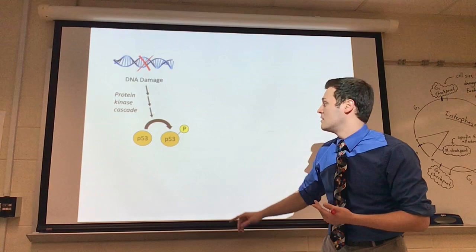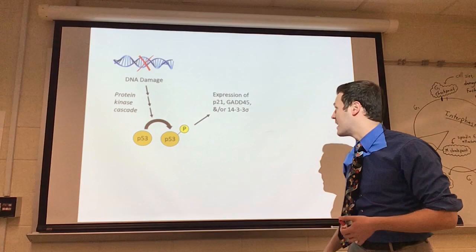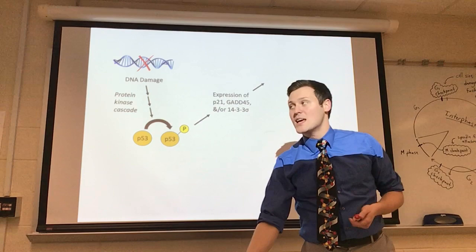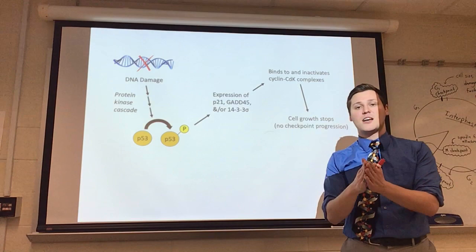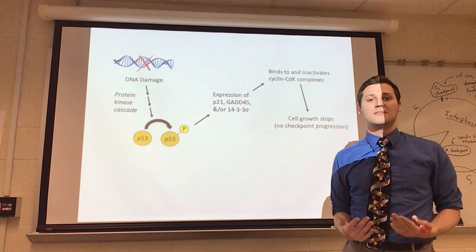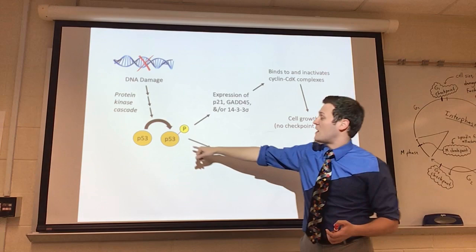we ultimately have P53 phosphorylated, and once it's phosphorylated, it can go on to do things like express these proteins that you don't need to know. These proteins will inhibit the cyclin, cyclin-dependent kinase complexes, or cyclin CDK complexes, and those complexes will prevent the cell from moving past its checkpoint. So, we temporarily put a halt on the progression of the cell cycle.